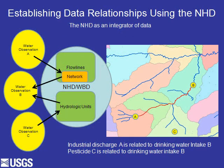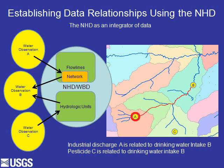A typical problem we want to solve is how points A, B, and C relate to each other. Point B is a drinking water intake, Point A is an industrial discharge, and Point C is a pesticide application. Using the NHD-WBD database model, we can determine that water observation A is upstream of B by tracing the network flow lines. Point C is not directly on a stream but is on a hydrologic unit, and we can relate that hydrologic unit to the flow lines to understand that C is also upstream of B. So we know that both A and C affect the drinking water intake at B — that's the type of problem we're trying to solve.